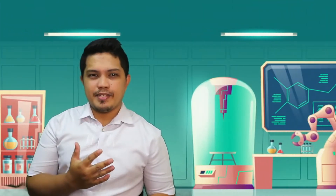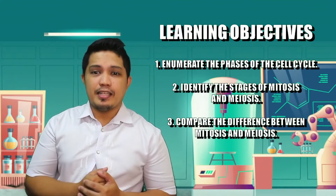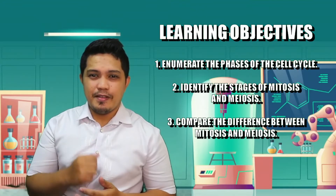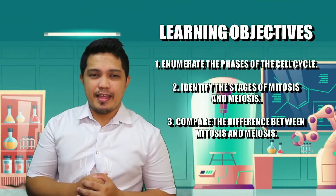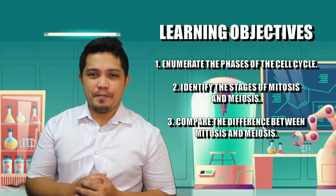For today's objectives: number one, enumerate the phases of the cell cycle; number two, identify the stages of mitosis and meiosis; and number three, compare the difference between mitosis and meiosis.